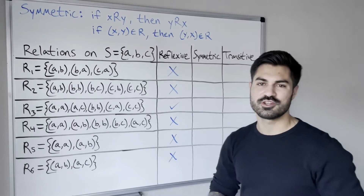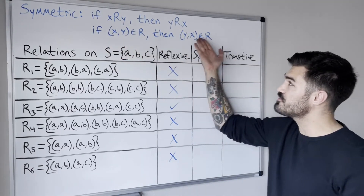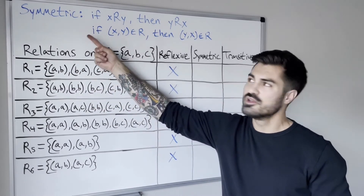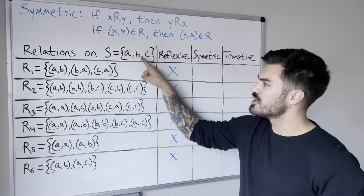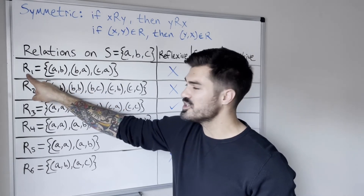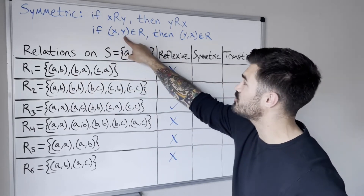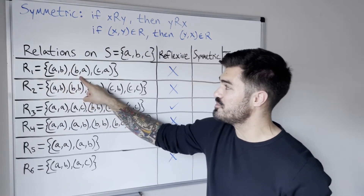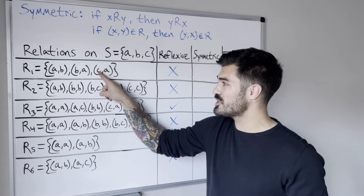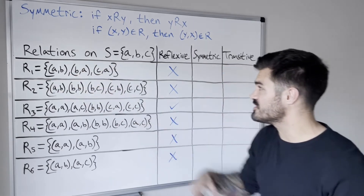Now let's check whether each relation is symmetric. Remember, symmetric means that if X is related to Y, then Y is related to X. For symmetric, we go directly to the relation — not to the set. We look at the first ordered pair, say (A,B). Since (A,B) is in the relation, we also need (B,A). For relation one: we have (A,B), and (B,A) is also there. Then we have (C,A), so we need (A,C) — but we don't have (A,C), so this relation is not symmetric.